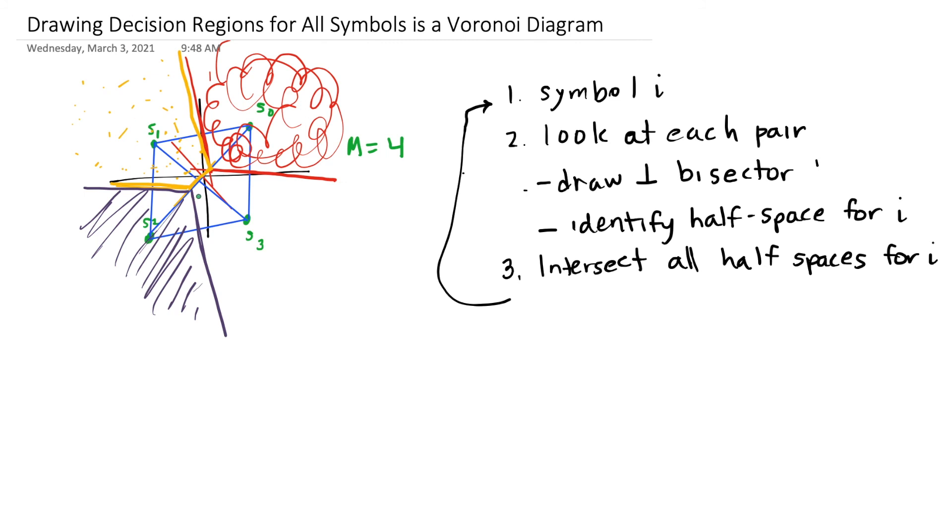And then finally, we already have all the perpendicular bisectors for the region of S3. And in fact, we know it's got to be everything else. Everything in here is going to decide S3. So we've gone through this procedure for each symbol. If we had more than four symbols, of course, we'd have to do this more times. Each one would be more complicated. It might have more neighbors. Typically, we're going to take advantage of the symmetry of the modulation in order to avoid drawing so many perpendicular bisectors and being able to judge one symbol using the shape of another symbol.